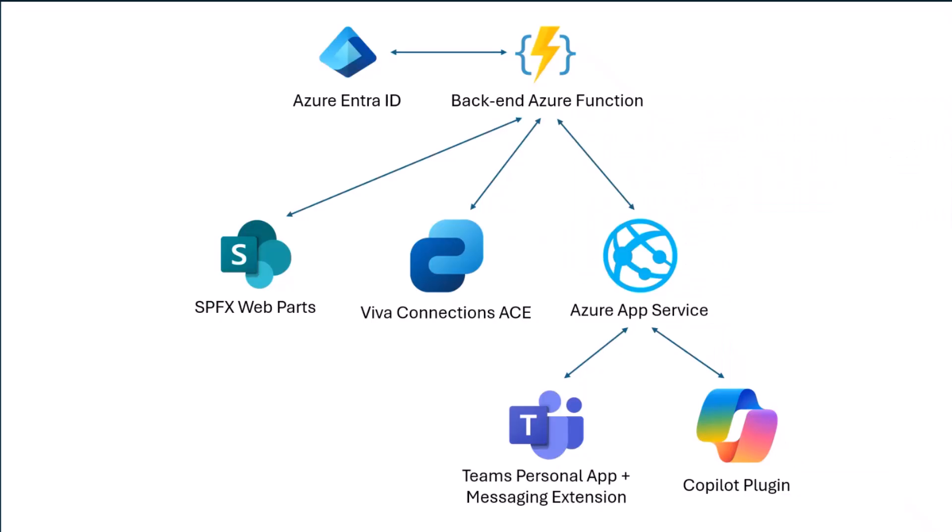This is the high-level architectural diagram of the solution. We have Entra ID in place because all security is based on Entra ID, which handles user authentication, issues tokens, and secures communication across all channels. Then we have SharePoint Framework web parts, which can host the web parts in SharePoint Online, the personal app in Teams, and the Viva Connections adaptive card. We also have an Azure App Service in between the Teams and Copilot extensibility and the backend Azure Function, because there are scenarios where we need a backend infrastructure that SPFx alone cannot provide.